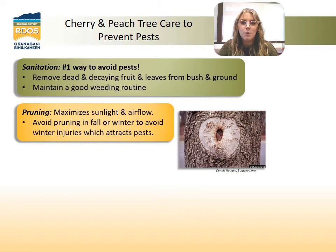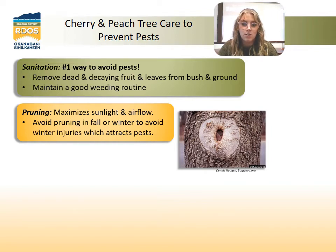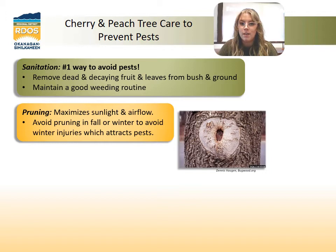A simple way to avoid certain pests is thinning your fruit to singles. Most families and homeowners do not need a whole tree's worth of fruit, and thinning will actually ensure your fruit size and flavor is optimal. For peaches, they should be spaced 6 inches apart, and cherries should be thinned to 10 cherries per spur.